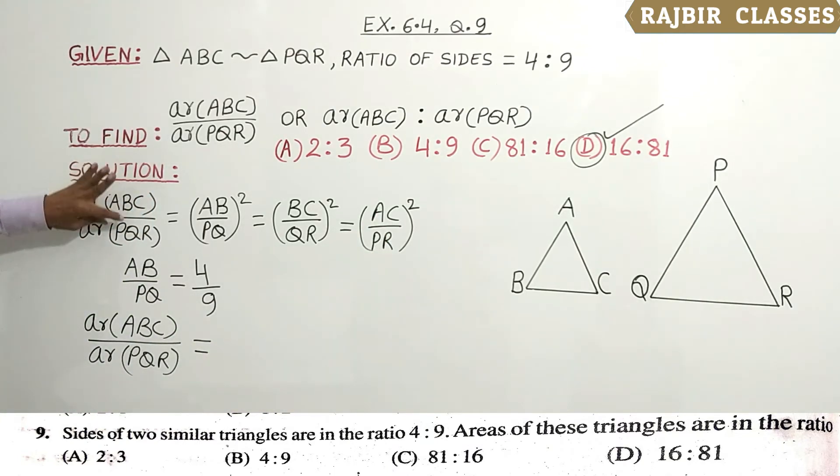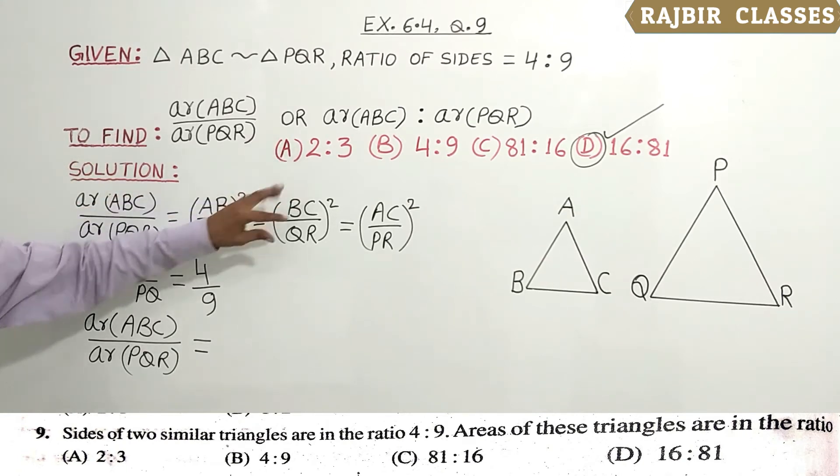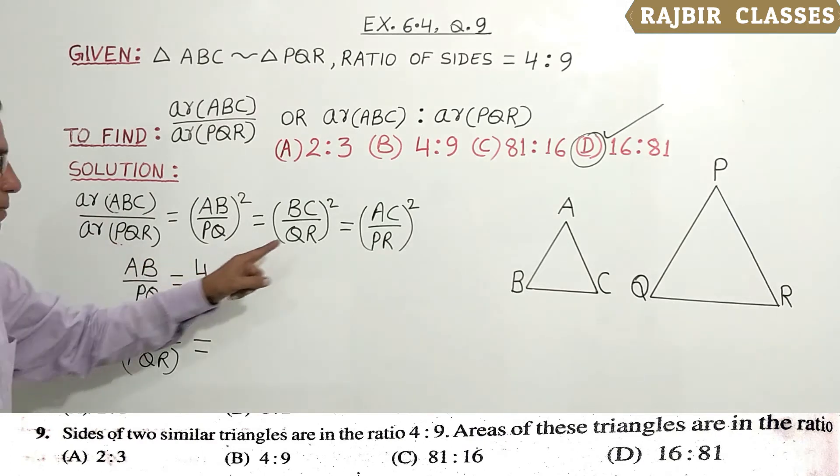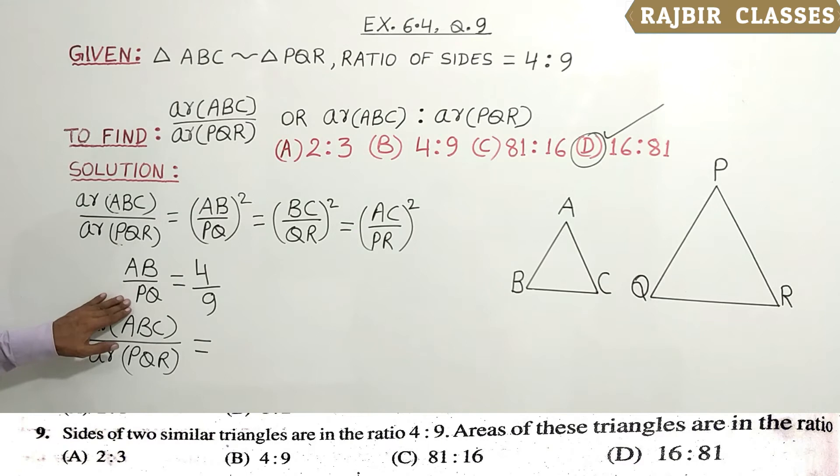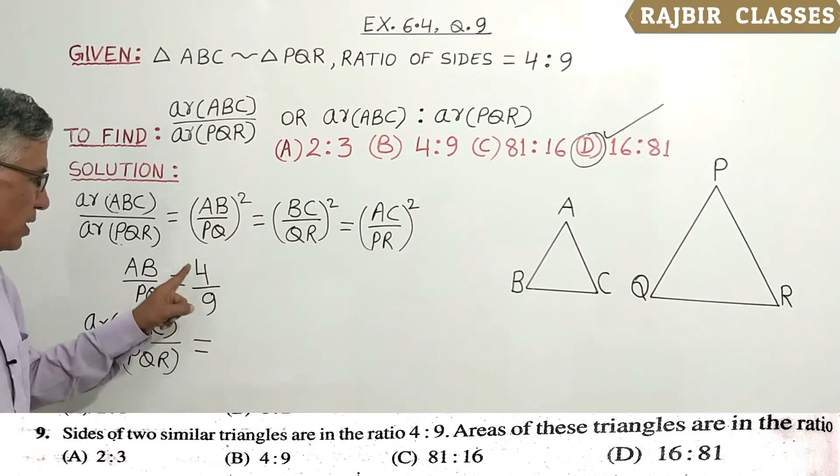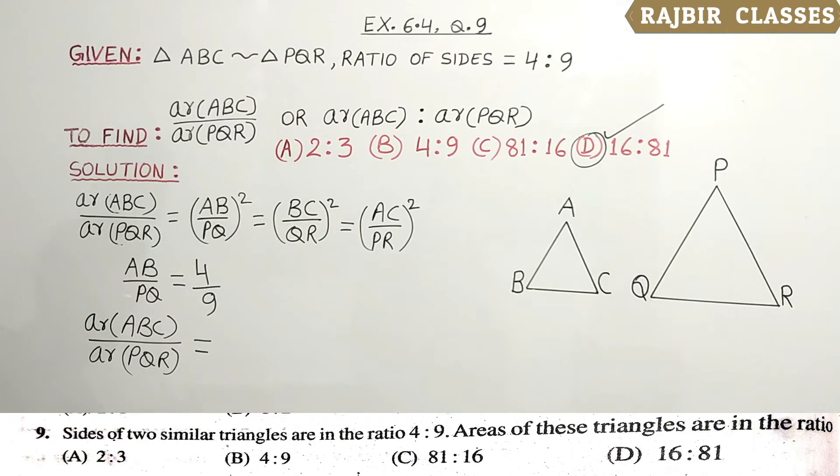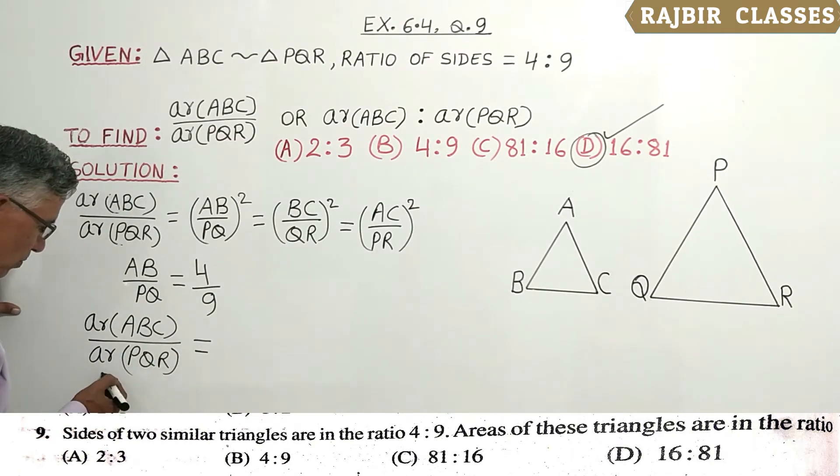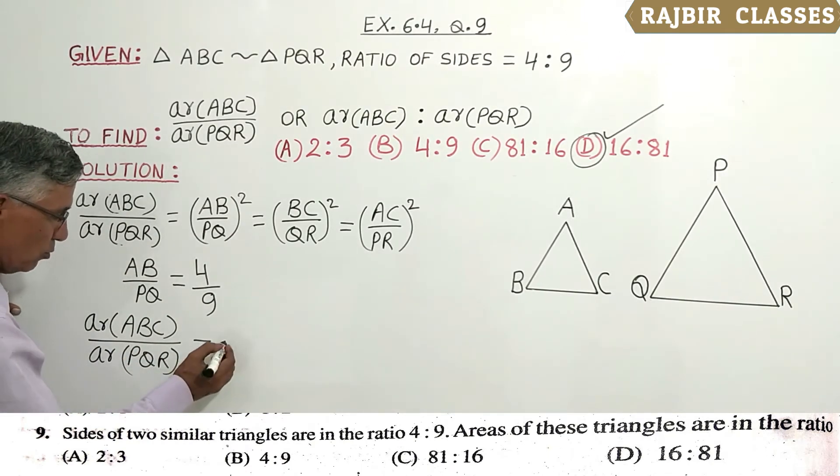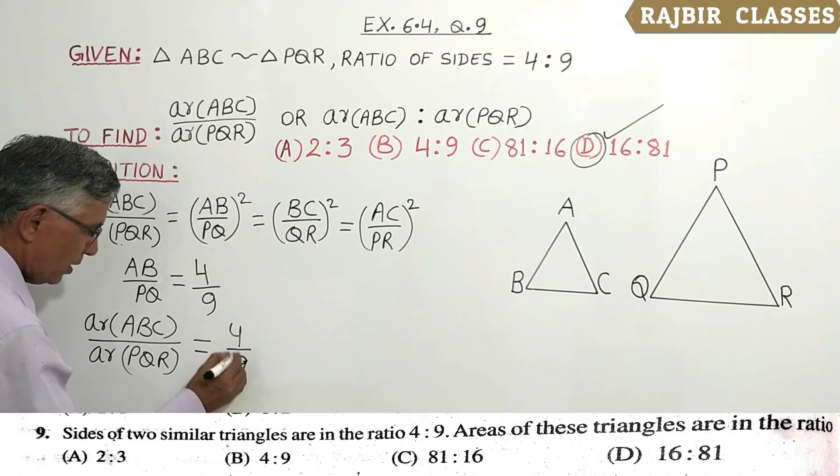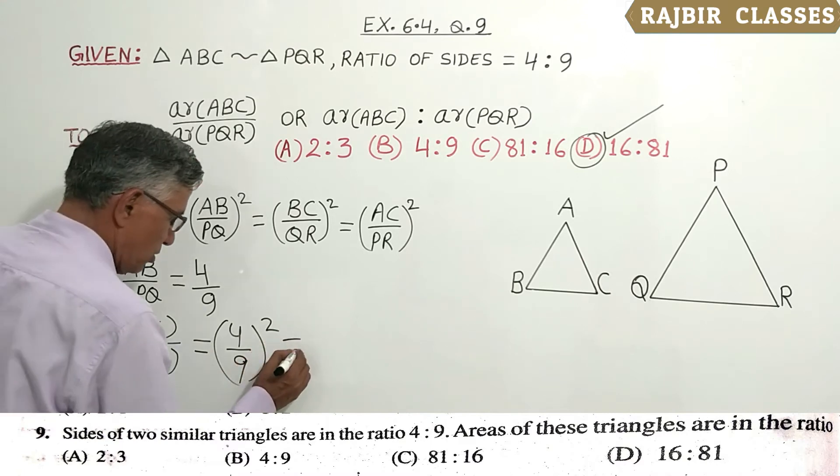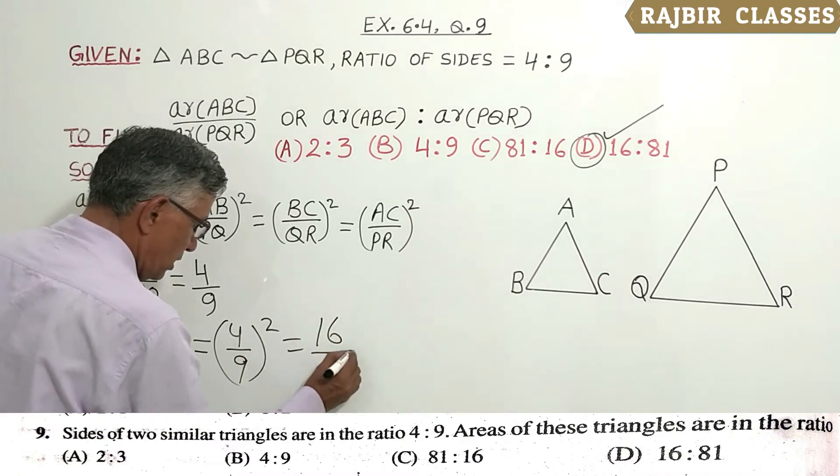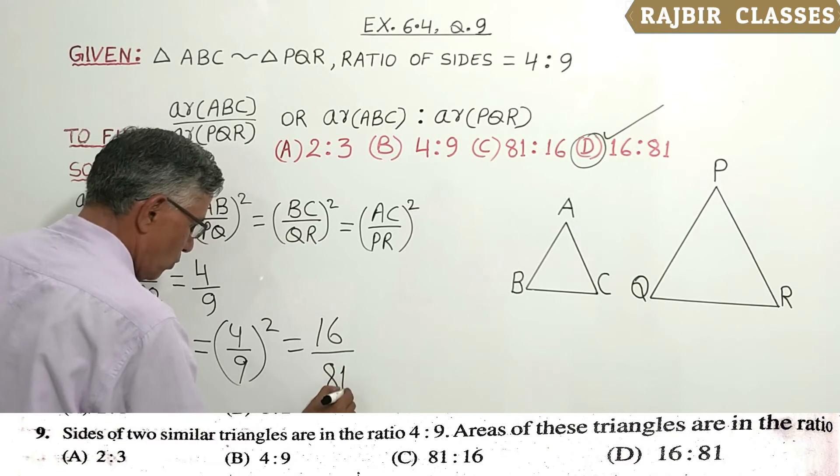AB upon PQ, BC upon QR, and AC upon PR - all equal to 4 by 9. So area ABC upon area PQR is equal to 4 upon 9 squared, which is equal to 16 upon 81.